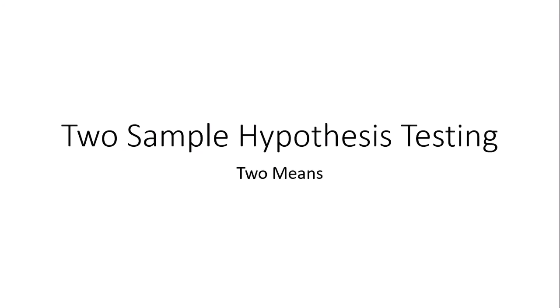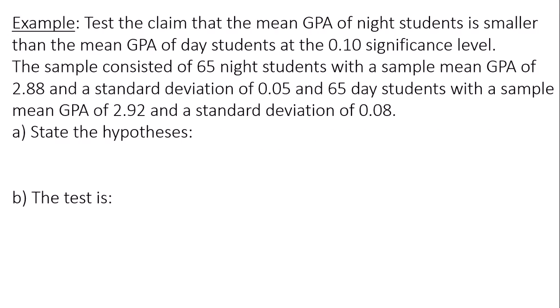Hello, this is a video on two-sample hypothesis testing for two means. In my example, we want to test a claim that the mean GPA of night students is smaller than the mean GPA of day students at the 0.10 significance level.